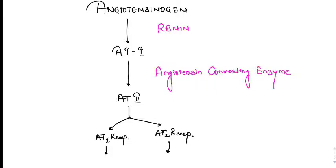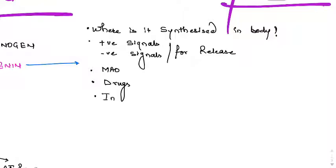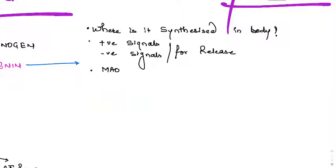Now we will talk about renin. The key questions are: where is it synthesized in our body, what are the positive and negative signals for its release, what is the mechanism of action, what drugs are available for renin, and what are the interactions of these drugs?